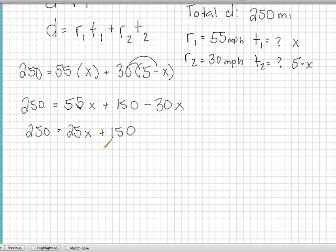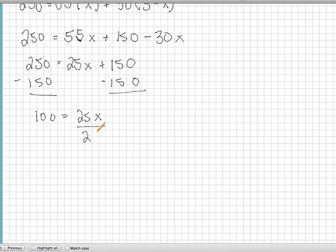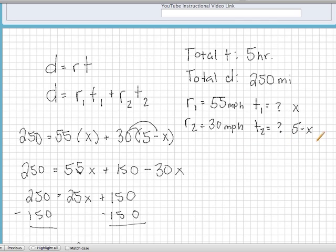And now let's go ahead and subtract 150 from both sides. So we are left with 100 is equal to 25X. If you divide both sides by 25, you'll see that we get X equals 4. So he was traveling 55 miles per hour for four hours and going 30 miles per hour for one hour. And those are the final answers for your question.